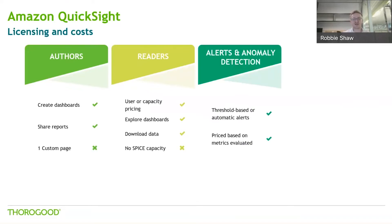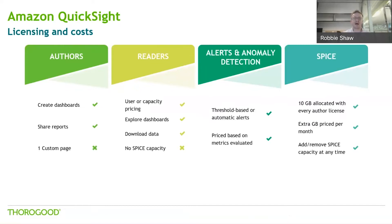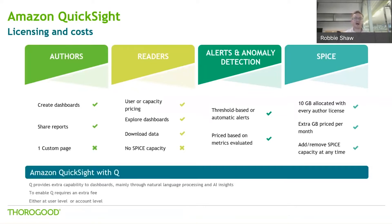There are additional costs for things like alerts and ML-powered anomaly detection - again, a really minimal amount per thousand metrics tracked. And then we have SPICE as well: each author gets 10 gigabytes automatically with their subscription, but you can have extra gigabytes beyond that for a really small amount per gigabyte per month added on top of that 10 gigabytes.